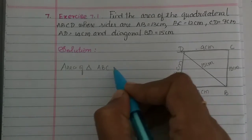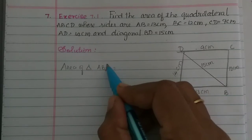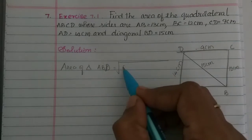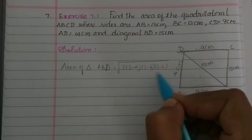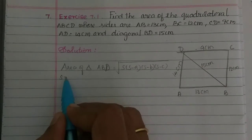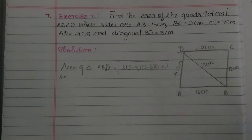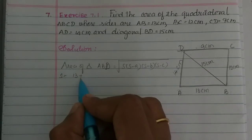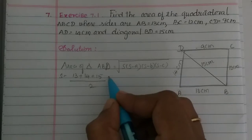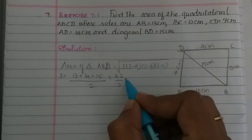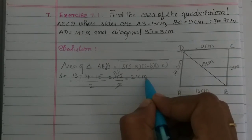Area of triangle ABD is equal to the square root of S into S minus A into S minus B into S minus C, using Heron's formula. So S is equal to the semi-perimeter of the triangle. That is 13 plus 14 plus 15 divided by 2, which is equal to 42 by 2, which gives us 21 centimeters.